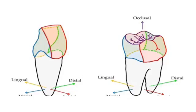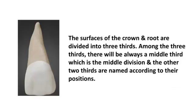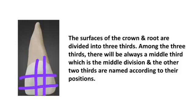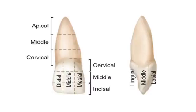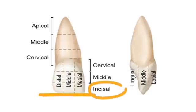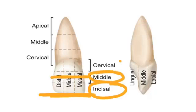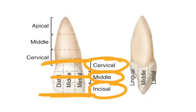In order to understand the various terms of tooth clearly, we need to know the imaginary division of tooth. The surfaces of crown and root are divided into three thirds. There will always be a middle one called the middle third, and the other two thirds are named according to their position. If the divisions are from the incisal edge, then the three thirds are the incisal third near the incisal edge, the middle third, and the cervical third near the cervical line.